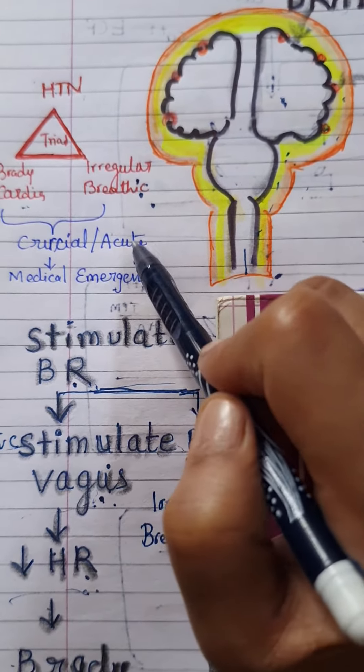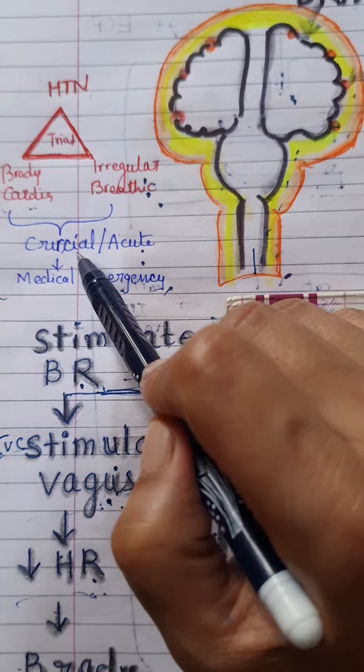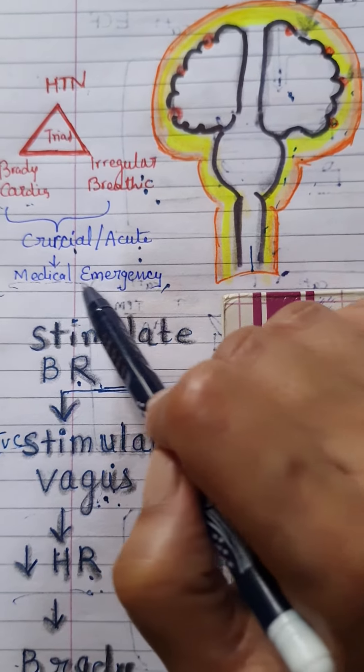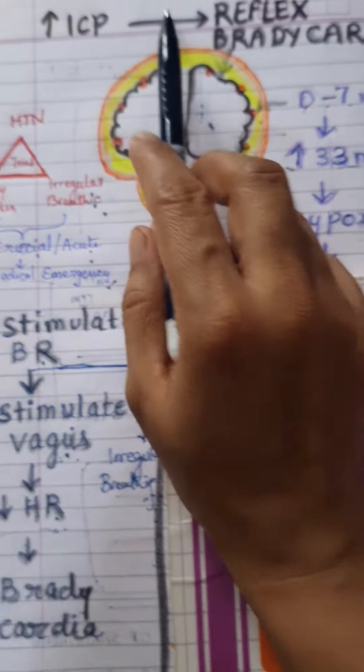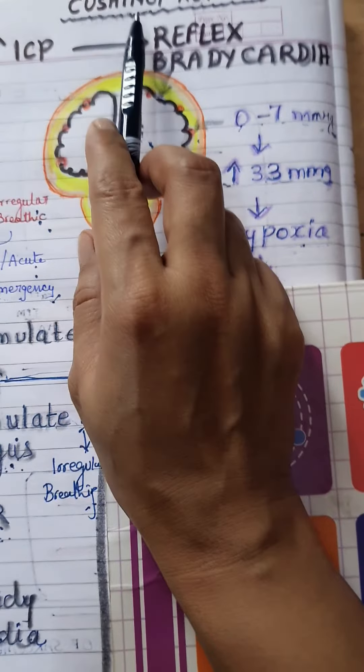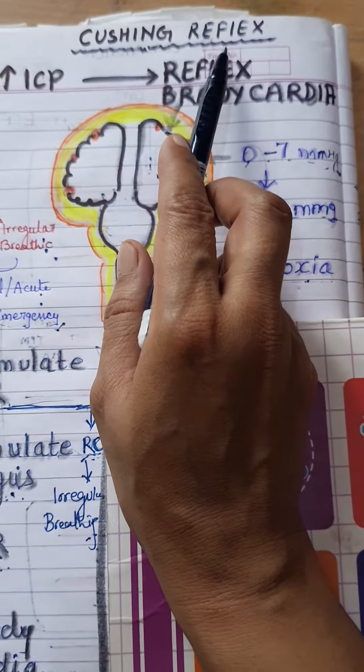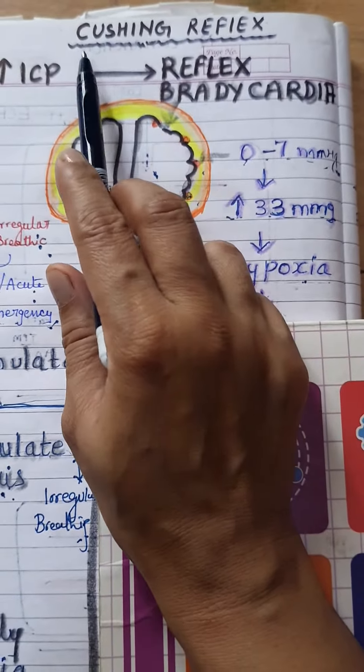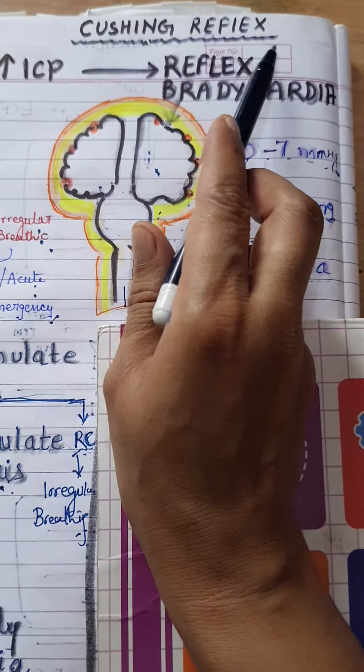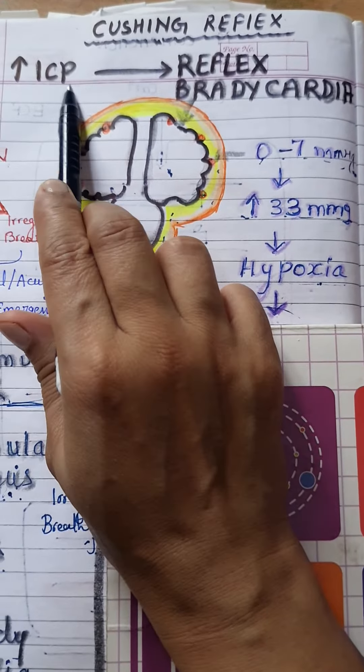It is an acute condition or it is a crucial condition and medical emergency. So, don't confuse Cushing reflex with the Cushing disease or Cushing syndrome. It is a Cushing reflex and is always associated with raised intracranial pressure.